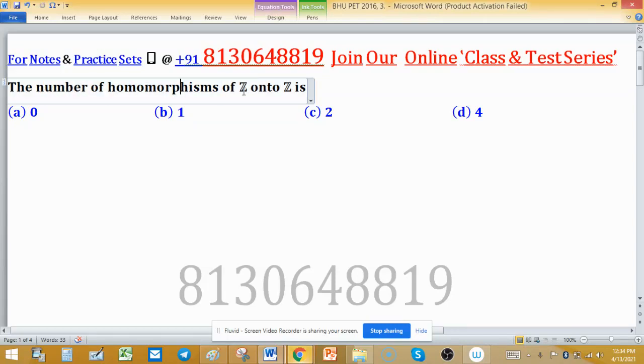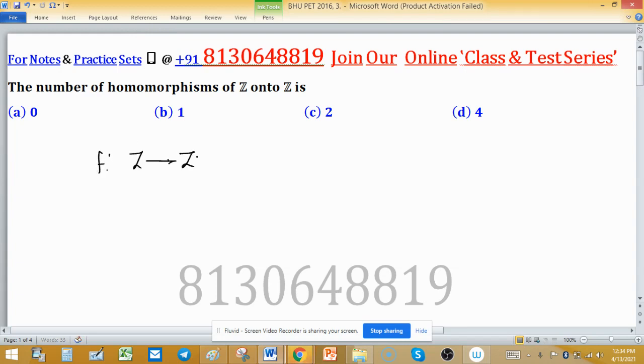The number of homomorphisms of Z onto Z is - we need to find number of onto homomorphisms. If f is a homomorphism from Z to Z, then we have to find number of onto homomorphisms.